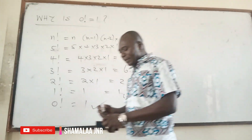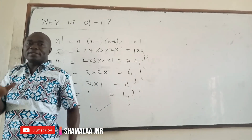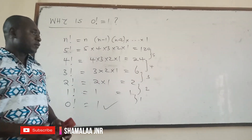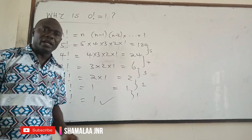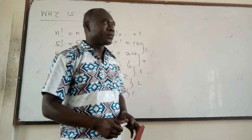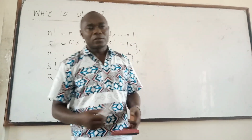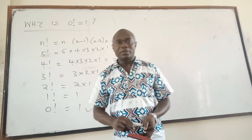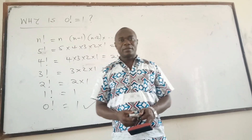So viewers, this is how to show that 0 factorial is equal to 1. This is the simplest proof you can ever get. Thank you very much for your attention. For more videos like this, subscribe to my YouTube channel. Thank you very much.